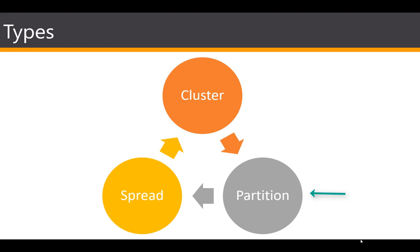Partition placement groups can be used to deploy large distributed and replicated workloads such as HDFS, HBase, and Cassandra across distinct racks. When you launch instances into a partition placement group, EC2 tries to distribute the instances evenly across the number of partitions you specify. You can also launch instances into a specific partition for more control, or let AWS automatically decide based on best practices.